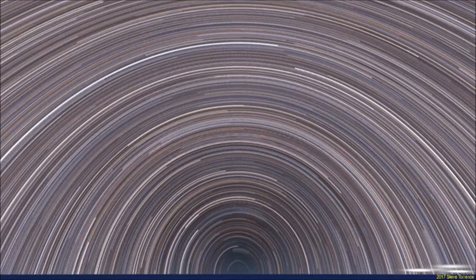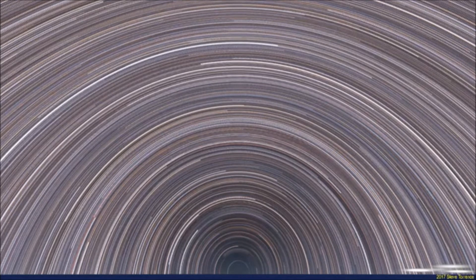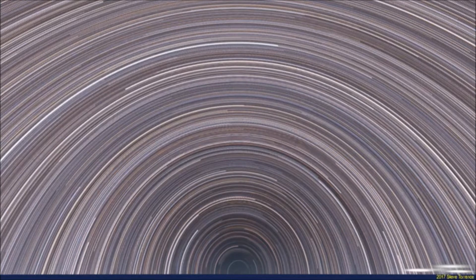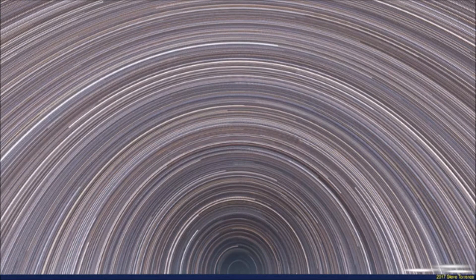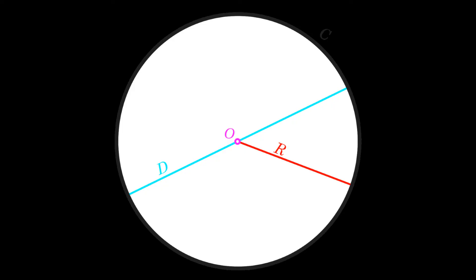Every star is doing a circle around Polaris. A circle is a shape consisting of all points in a plane that are at a given distance from a given point, which is the center. And in this real-life application, we are using Polaris to be the center of the stars, and they are in motion around Polaris in a circle orbit.